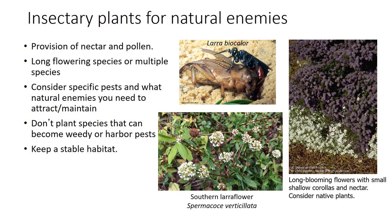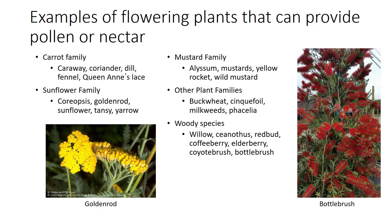Insectary plants for natural enemies provide nectar and/or pollen, serve as an alternate host, and provide shelter. You should consider provision of resources over the whole season by planting long-flowering species or multiple species. Consider the specific pests and what natural enemies you need to attract or maintain. Don't plant species that can become weedy or harbor pests. Keep a stable habitat. For example, Larra bicolor is a parasitoid wasp of mole crickets, which is a major problem in pastures. The adult wasps feed on a narrow range of nectar plants, including the southern Larra flower. When I was in grad school, I was in charge of mailing seeds of this plant to growers and ranchers for them to plant in order to increase the population of this biological control agent.